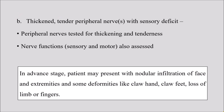The next clinical feature is the thickening of the peripheral nerves. The nerves can be either thickened or tender, and there may or may not be some sensory deficit. Peripheral nerves should be tested for thickening or tenderness, and nerve functions — both sensory and motor — should be assessed. In advanced stages, some patients may present with nodular infiltration of the face or extremities, and in some cases there may be deformities like claw hand, claw feet, or loss of limb or fingers.